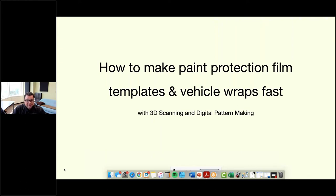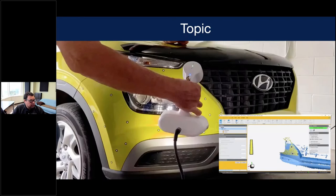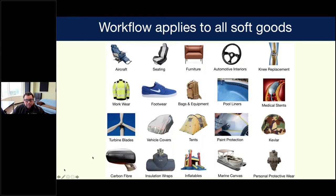Our topic is how to make paint protection film templates and vehicle wraps fast with 3D scanning and digital pattern making. In our example, we're going to be showing how to process a scan. The vehicle is a late model Hyundai — a good example because it's not too much surface area to scan and it's easily visible. This process applies to all soft goods: paint protection film, vehicle wraps, vehicle covers, interiors such as seating, dashboards, console panels, and more.